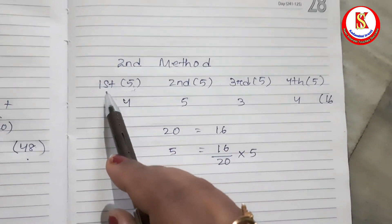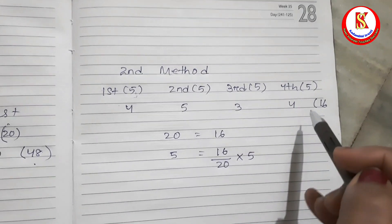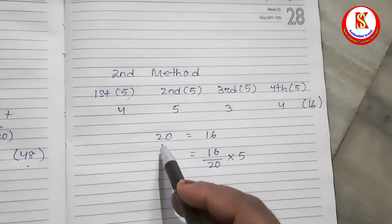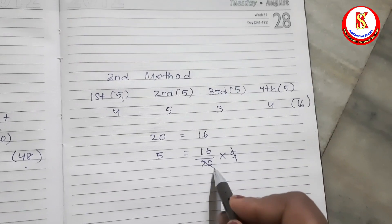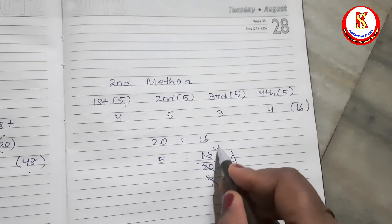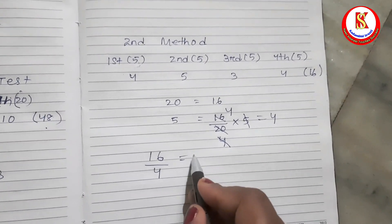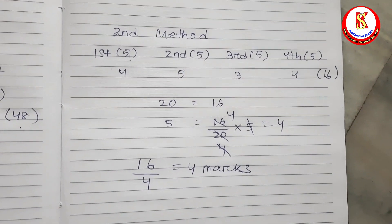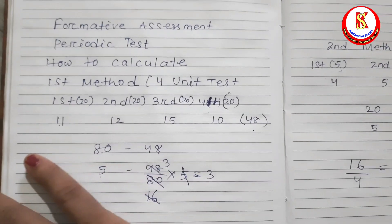In Method 2, each test is out of 5. First unit test: 4 out of 5; second: 5 out of 5; third: 3 out of 5; fourth: 4 out of 5. Total: 16 out of 20. Converting: 16 divided by 20 multiplied by 5 equals 4. Alternatively, find the average: 16 divided by 4 equals 4. So the child gets 4 marks out of 5. This is one of the easiest methods if we conduct small exams only out of 5.